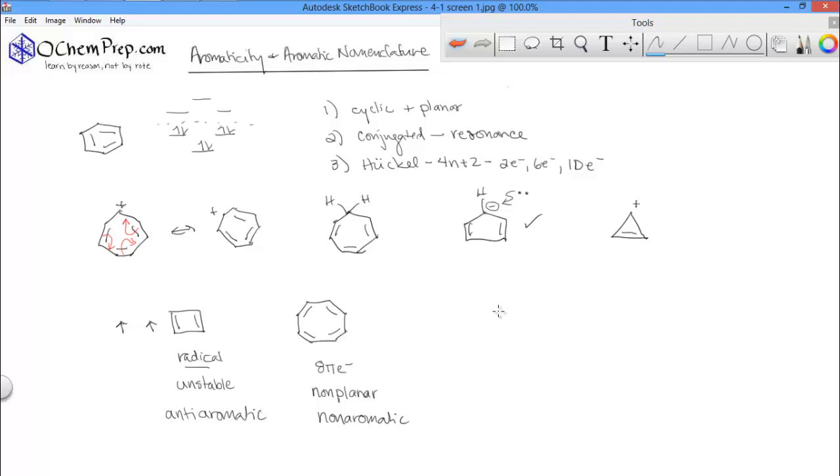When we look at structures that have what are called heteroatoms, or non-carbon atoms in a ring, we have to think about where we count our lone pairs.